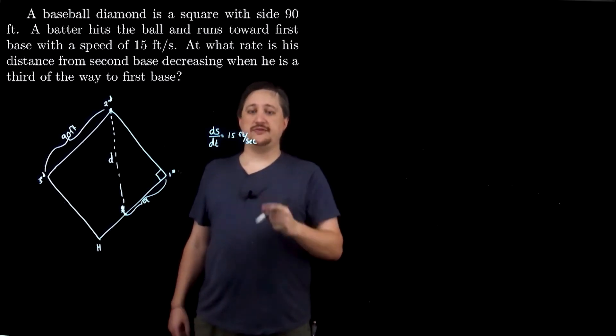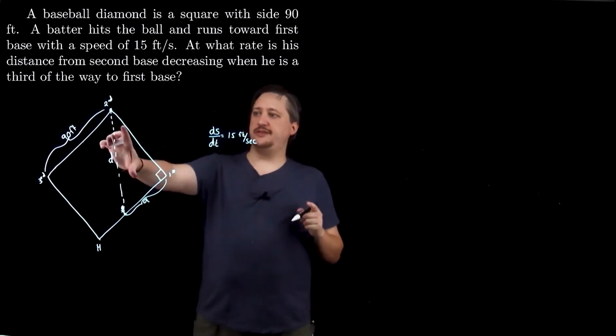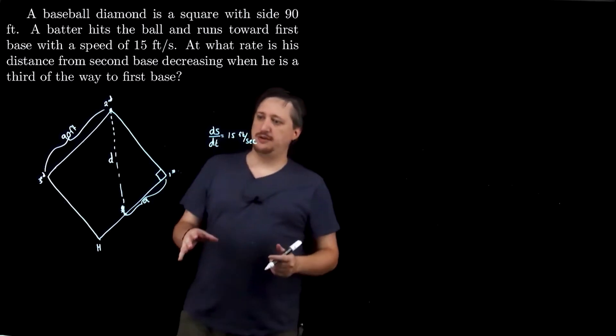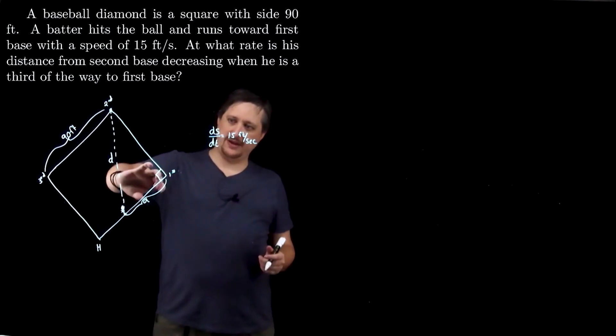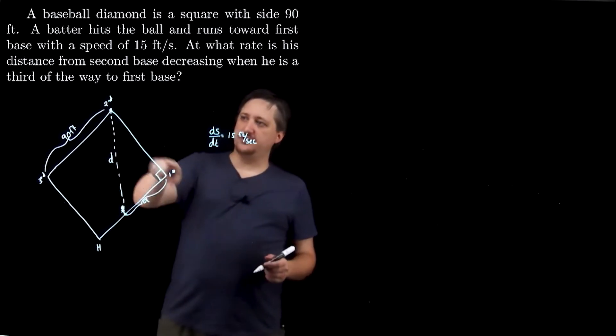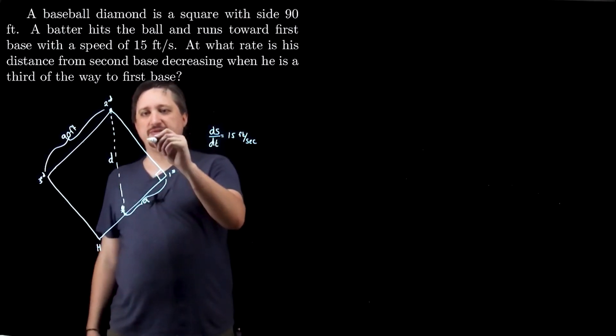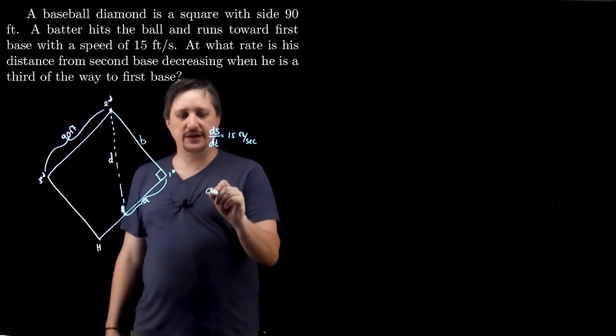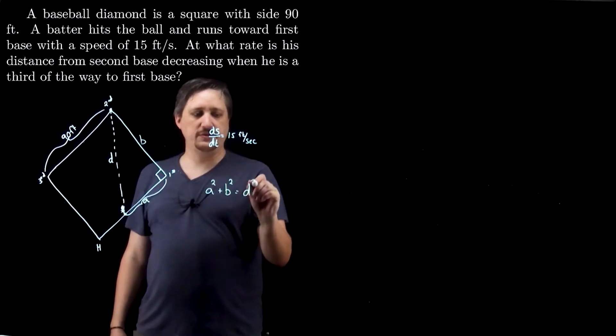So the speed is 15 feet per second. They want to know how fast this is closing. All right. So let's see what we can figure out here. I need some way of relating this distance and that distance, because I can figure out stuff about how that's changing. And I know stuff about how that's changing. Or I want to know stuff about how that's changing. But this is a right triangle, right? So this thing, if I say, okay, this is, let's call this b. Then I know that a² + b² = d².